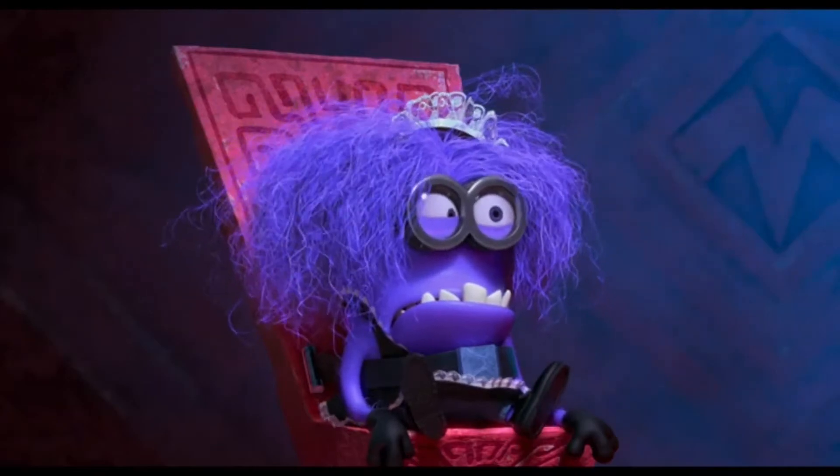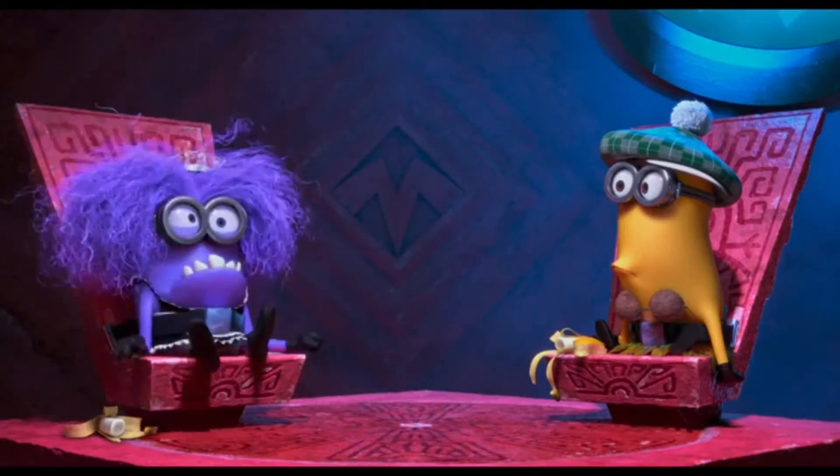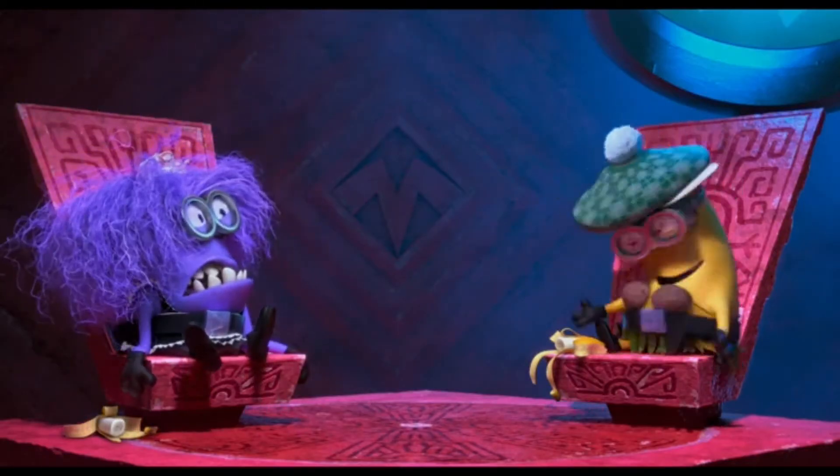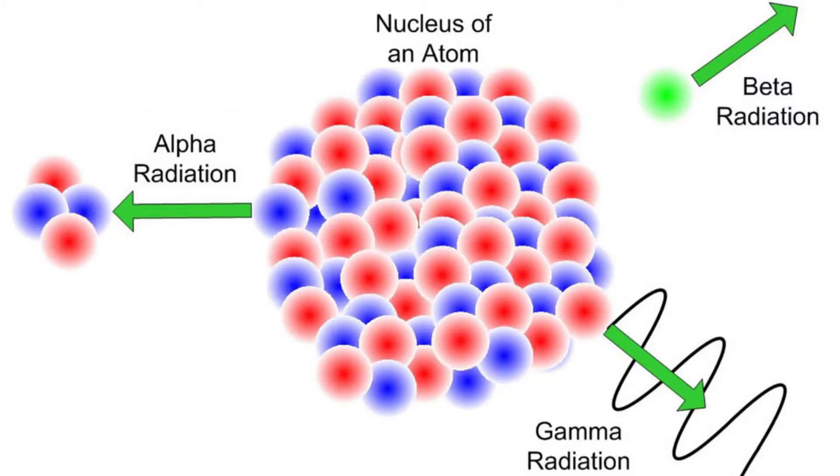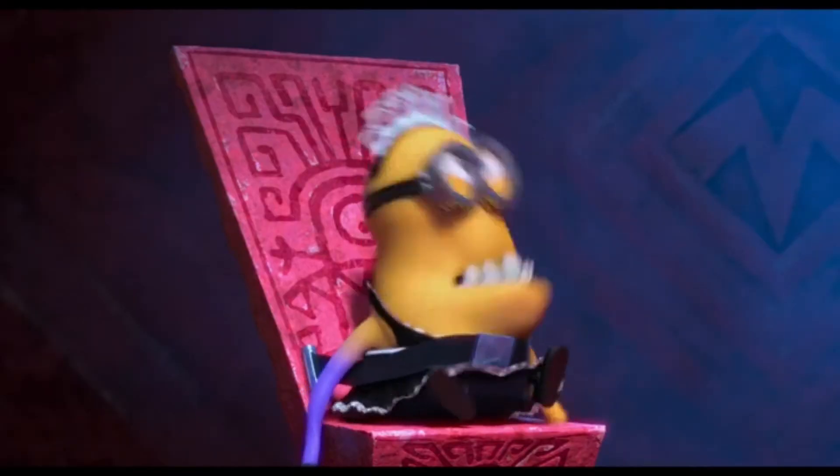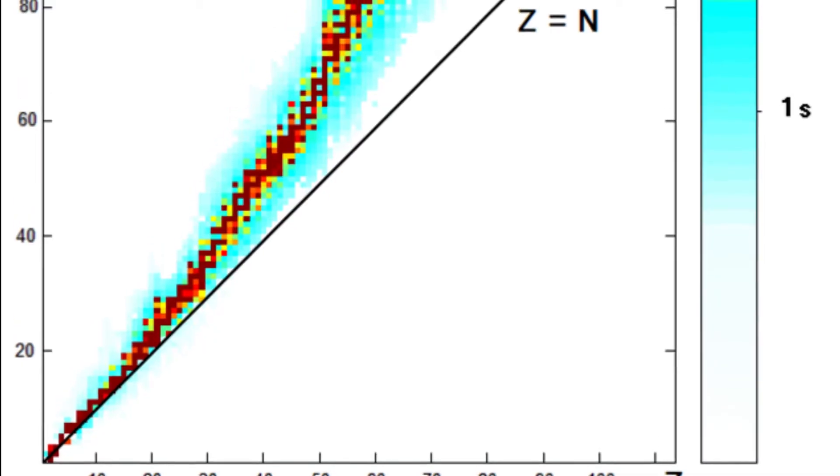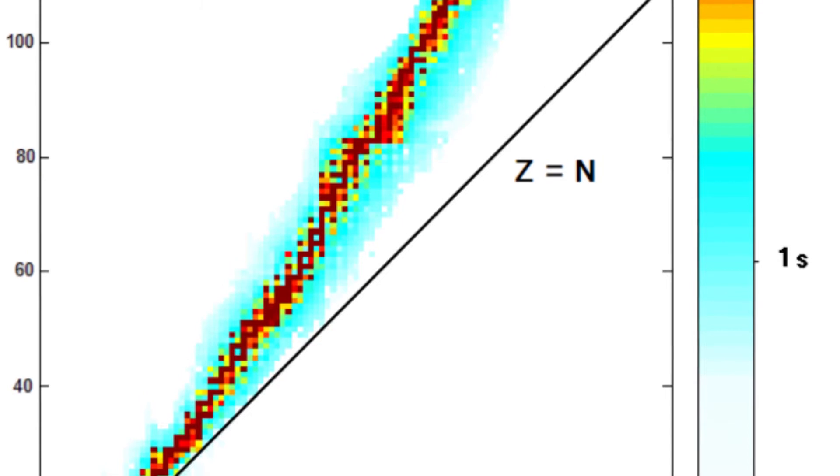How stable are the nuclei of isotopes? Some isotopes are very stable, while others are not stable and can be radioactive. A nucleus with too many neutrons, or too few neutrons, can make it unstable. Scientists have studied the stability of nuclei of different isotopes.